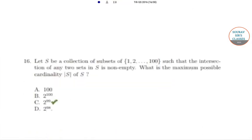Hello students, welcome to sort of search classes. The question is: Let S be a collection of subsets of {1, 2, ..., 100} such that the intersection of any two sets in S is non-empty. What is the maximum possible cardinality |S| of S?